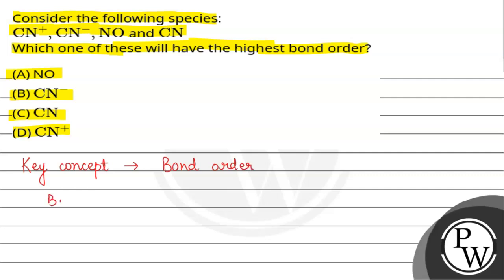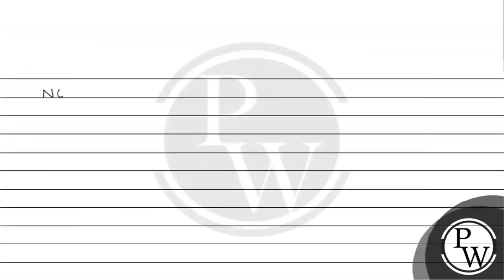The key concept is bond order. The bond order is equal to 1/2 of bonding electrons minus number of anti-bonding electrons. So what do we do? We find the electronic configuration with respect to molecular orbital theory.